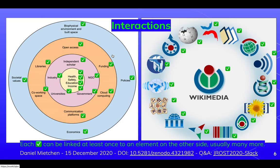Now let's look at the interactions. This is a complex picture, so instead of drawing all the different interactions, I've just put a tick mark where there is at least one example that I know of going from any of those tick marks to the other side. In many of those cases there are actually tens, hundreds, thousands, or sometimes even millions of such examples. The point is essentially any element of the research landscape has counterparts in the Wikimedia landscape and vice versa.